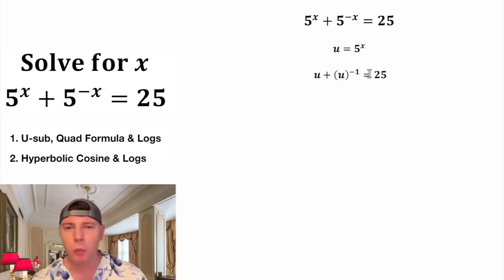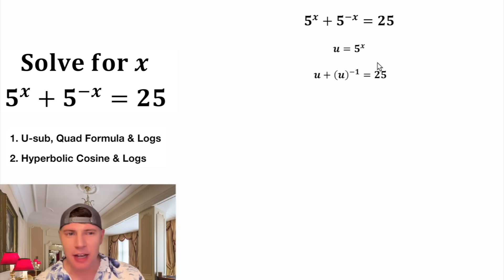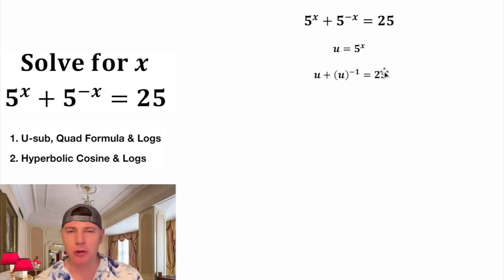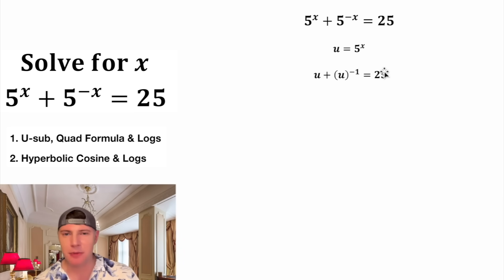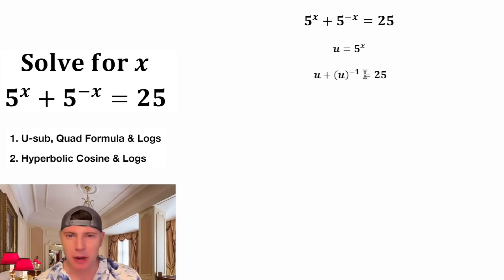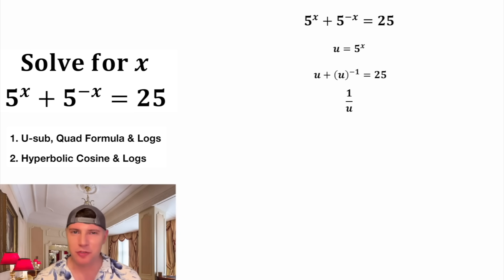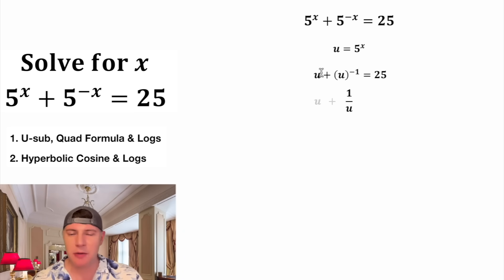Let's talk about what a negative exponent is. Anytime you have something to the negative 1 power, it means 1 divided by that something. So this u to the negative 1 power is the same thing as 1 over u. Here are some notes for negative exponents. And then we can copy down the u and the 25.